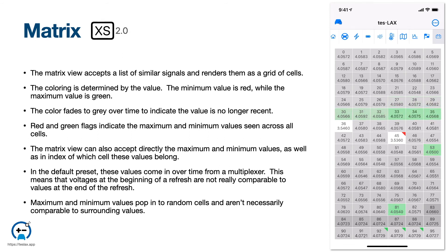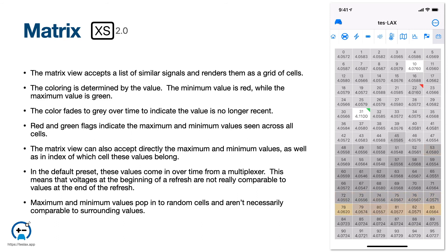The matrix view is intended to visualize large numbers of similar values. The coloring is a gradient determined by value, with red being the minimum and green being the maximum. Red and green flags show the maximum and minimum values. The matrix view can accept data from two types of signals. Each signal cell can source its own value from its own signal. A minimum and maximum value, combined with an index of which cell is the max and which cell is the min, can be used to provide maximum and minimum values directly. The default Tesla 3Y and Plaid presets are configured with both types of updates, resulting in a slow rolling update over time as well as a maximum and minimum value that pops in at random times. As a result, values aren't really comparable over time, especially if overall power draw from the battery varies over time, such as during acceleration or deceleration.